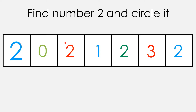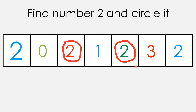What is this number again? Two. What is this number? Let's circle that number and we are going to say two. Let's find number two. I found the first one — let's circle that. Two. Here I found another one. Two. Two, the last one. Two. This is number two.